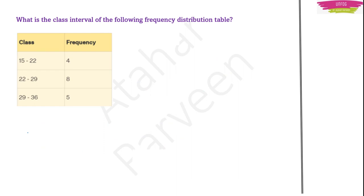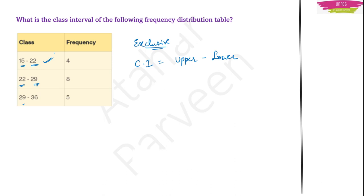Let us take an example to find the class interval of a given frequency distribution table. We can see that it is an exclusive class interval — 22, 22 and 29, 29. To find the class interval, the formula is upper limit minus lower limit. The upper limit of the first class interval is 22 and the lower is 15, so 22 minus 15 equals 7. For the second class interval, 29 minus 22 also equals 7. Usually class intervals are the same.